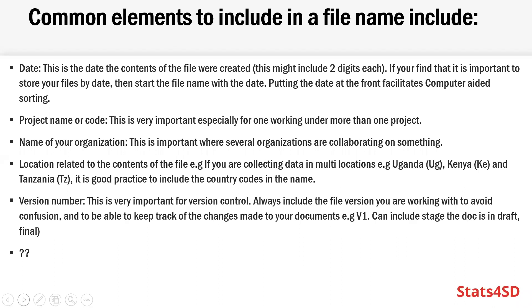The name of your organization is also an important element to include in your naming convention, as well as location. For projects carrying out multi-location studies — say Uganda, Kenya, Tanzania — it's advisable to put a location code so that it's easy for someone to quickly tell, for example, that this data was collected from Uganda, this from Kenya, and so on.